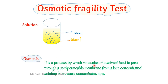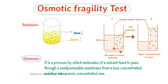Osmosis is a process by which molecules of solvent tend to pass through a semi-permeable membrane from a less concentrated solution into a more concentrated solution. In a beaker with a semi-permeable membrane, this membrane has the capacity to pass selective particles. One side has very little solute while the other side has a high number of salt molecules. So water will move from less concentration to higher concentration — this is the very important basis of the osmotic fragility test.